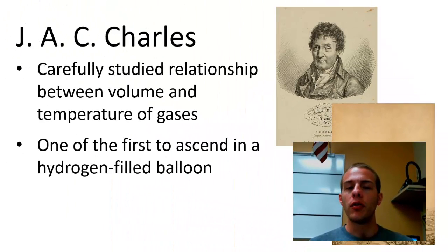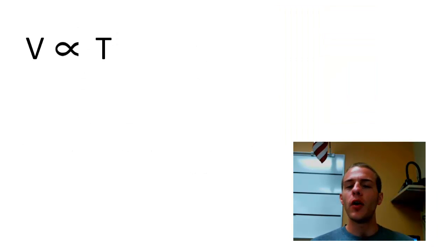So what J.A.C. Charles found when he made these careful measurements is that the volume of a gas is directly proportional to the temperature of the gas. And again, this is all assuming that the pressure and the amount are kept constant. So this little symbol over here means that the volume is directly proportional to the temperature. So that means as the volume increases, the temperature increases. As the temperature increases, the volume is going to increase. As the temperature decreases, the volume is also going to decrease.